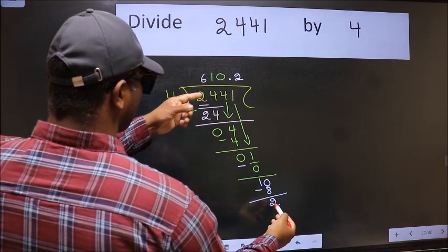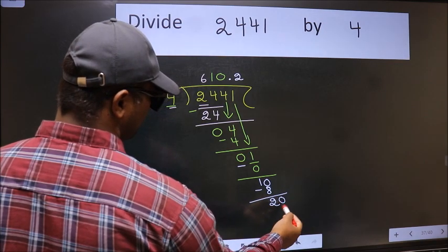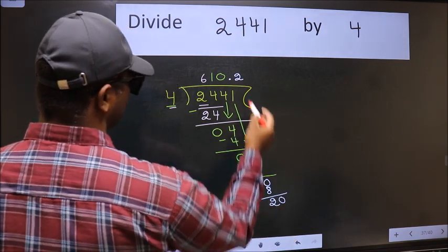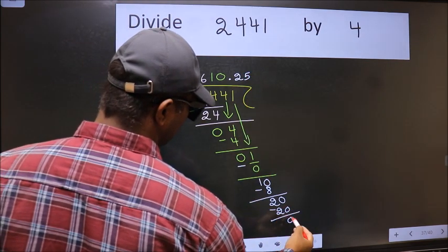2 is smaller than 4, and we already have the decimal, so directly take 0, making it 20. When do we get 20 in the 4 table? 4 times 5 is 20. Now we subtract. We get 0.